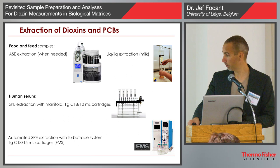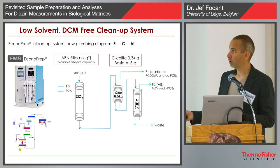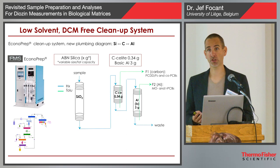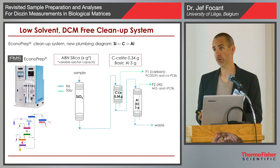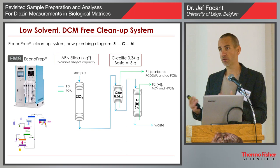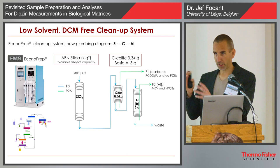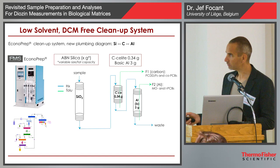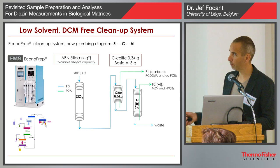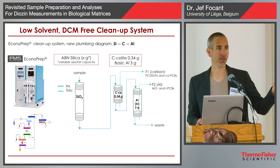The title is important: low solvent, DCM-free. We want to reduce the quantity of solvent we use, and if we can get rid of chlorinated solvents, that's good. That's been one of the driving forces for the last few years. For those familiar with the Power Prep or the old generation of it, quite a significant amount of dichloromethane was used. We've been trying to readjust the method to get rid of the DCM, and that's working now. This is based on the use of an interesting piece of equipment named the Econoprep.